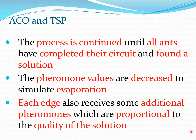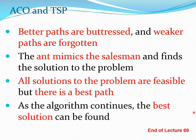We want to reinforce paths which are beneficial or more lucrative. ACO essentially ensures that better paths are strengthened and weaker paths are forgotten. The ant mimics the salesman and finds an optimal solution. All solutions found are feasible, and the advantage is that in simulation we can use a large number of ants — all exploring solutions simultaneously. We then compare these feasible solutions and find the best path, rather than evaluating all possible paths. As the algorithm continues, a good solution is found and, being a heuristic method, this solution is likely to be good and useful for many practical problems.